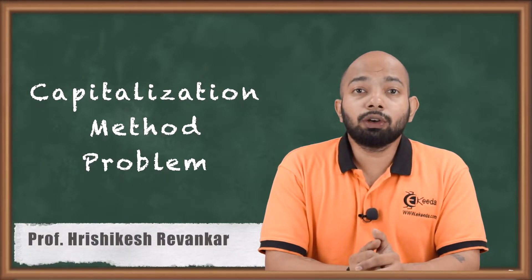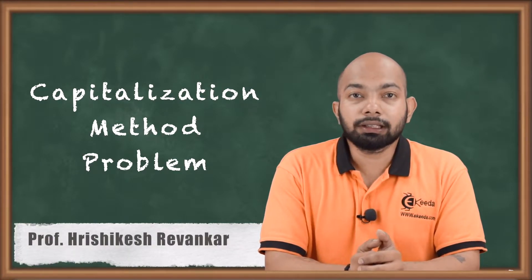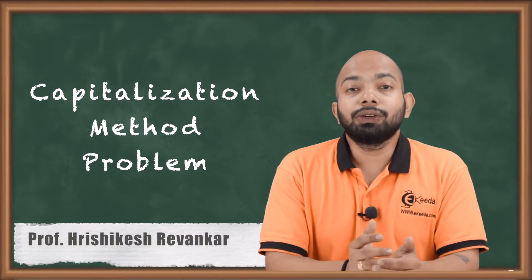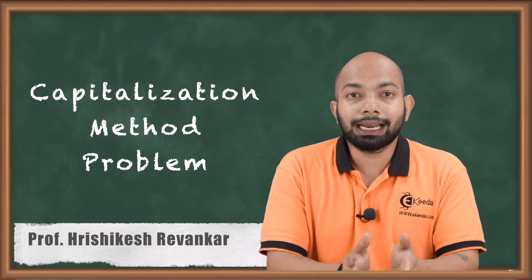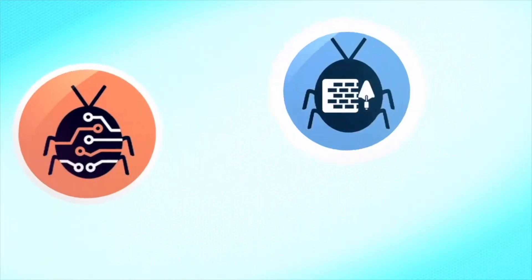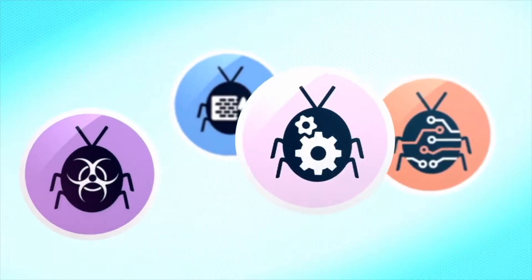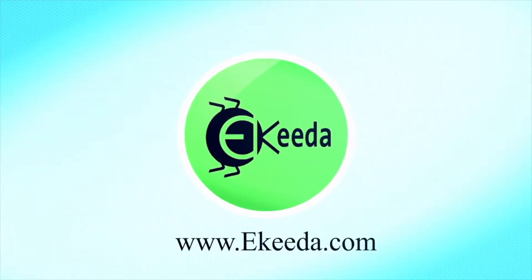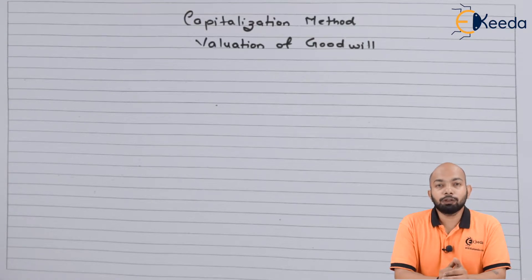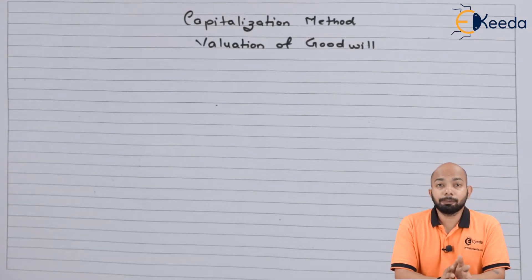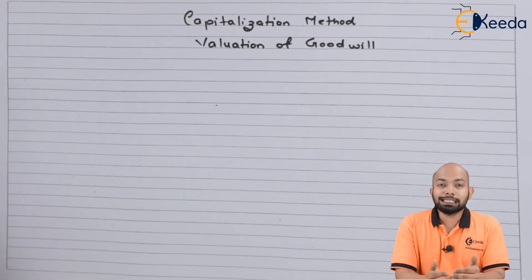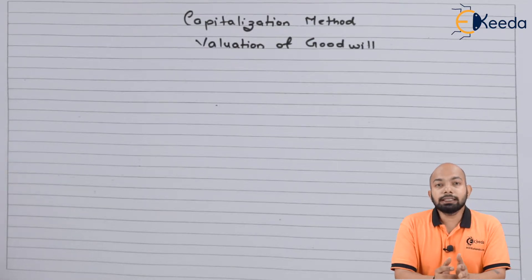Hello friends, we will be discussing another method of valuation of goodwill which is known as the capitalization method, with an illustration so that you can understand how the calculation for goodwill is supposed to be done under this method. Valuation of goodwill represents the reputation of the business calculated under different methods. We have already learned about the average profit method, super profit method, and annuity method. Now this is the next method — capitalization method — used for valuation of goodwill of any organization or firm.